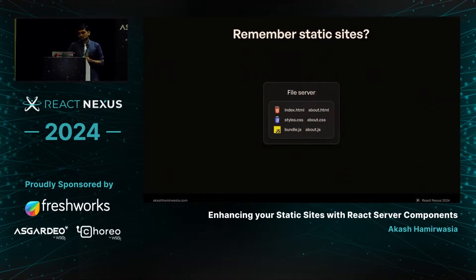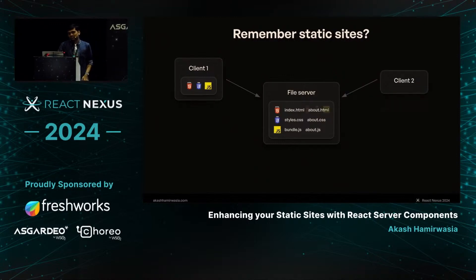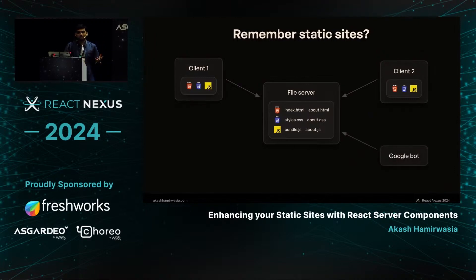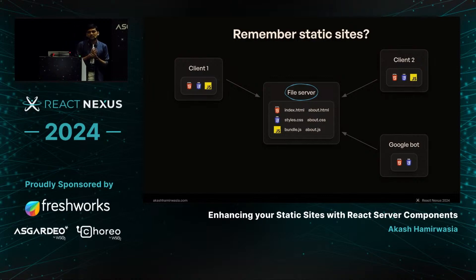Then you upload it on a file server. When a client comes to your file server and requests your website, it simply returns all the files — the HTML, CSS, and JavaScript. Another client gets the same set of files, so client one and client two see the same website. A web crawler can't really understand JavaScript, so it will only request the HTML and CSS to get a sense of your content for search rankings. The file server is not a smart server — it's like a disk whose job is simply to return the files it was requested for.